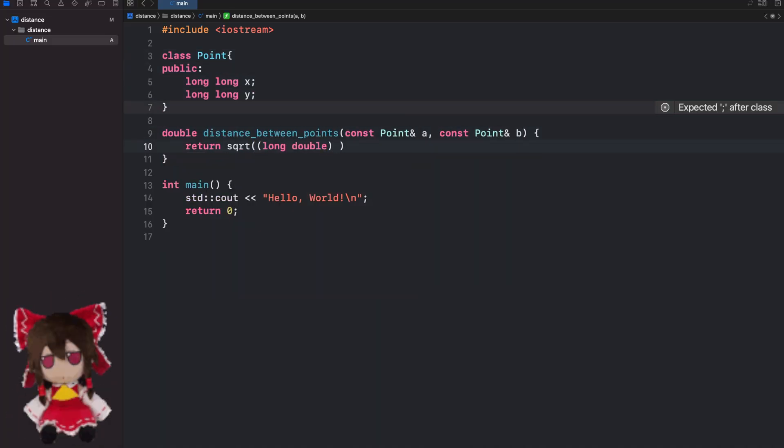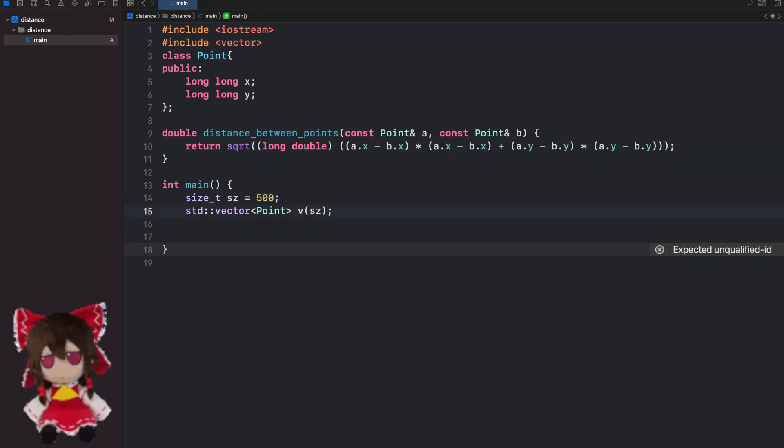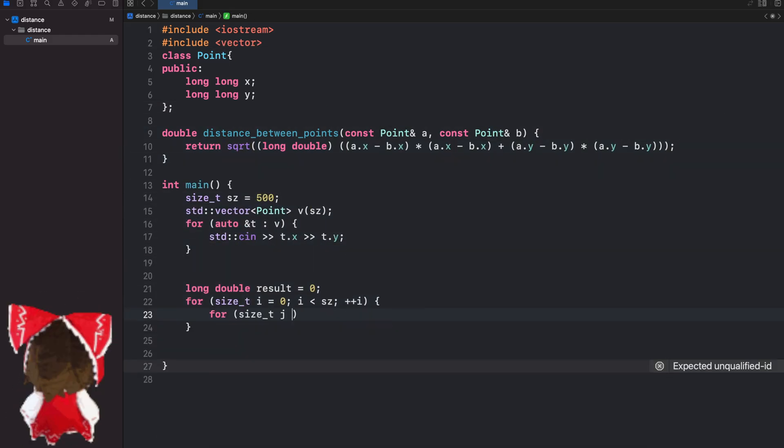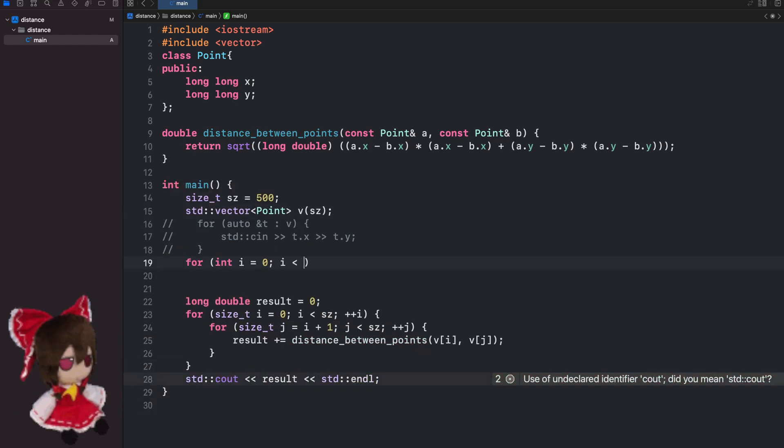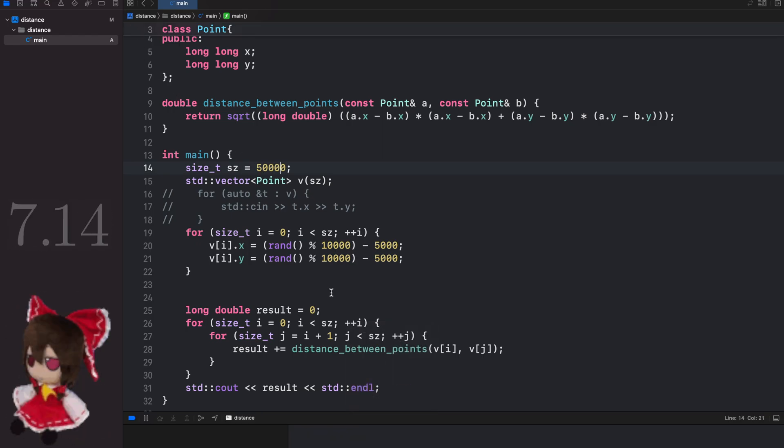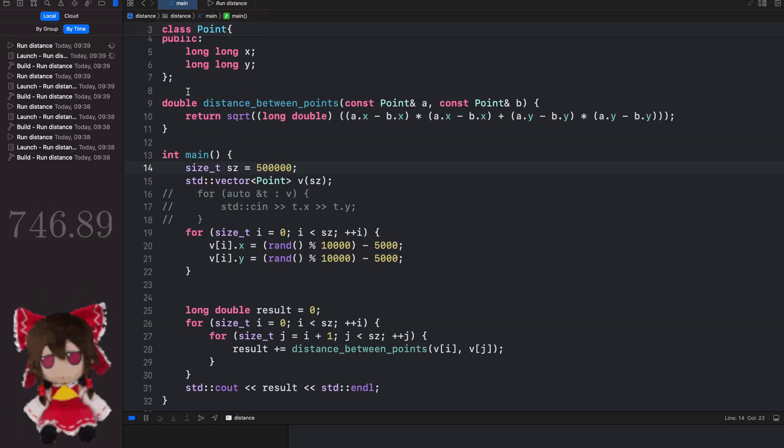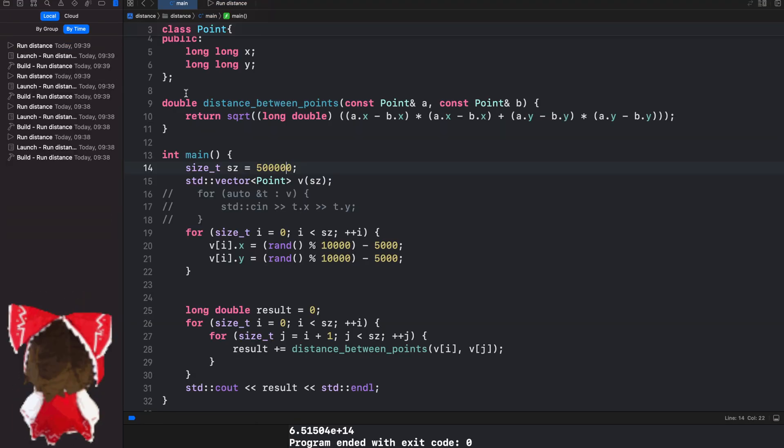So what could be the issue? We could just go through all pairs of points, calculate the distance between them using a simple formula, and return the sum. At small n, the program works instantaneously. But already at n being 50,000, the program does not fit into the time limit of 2 seconds. And at n being 500,000, the program runs for about 13 minutes, which indicates this solution cannot be optimized by simple ways.